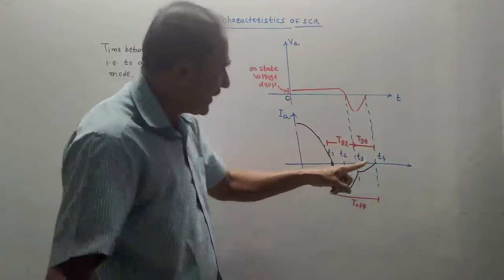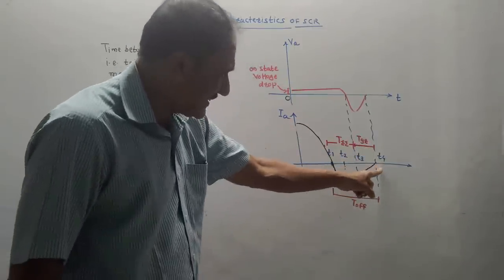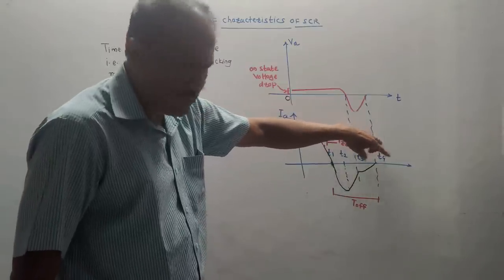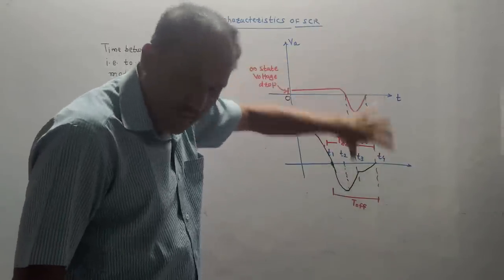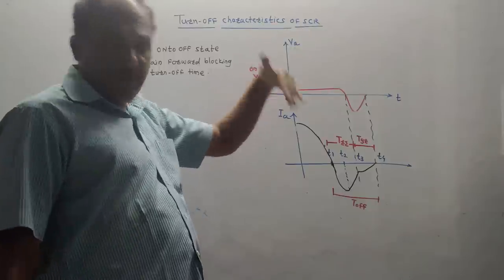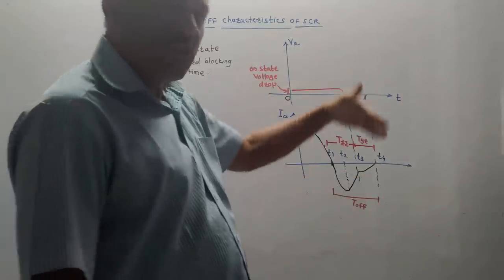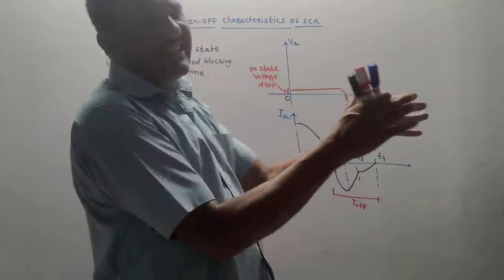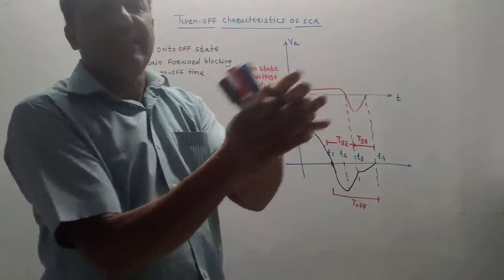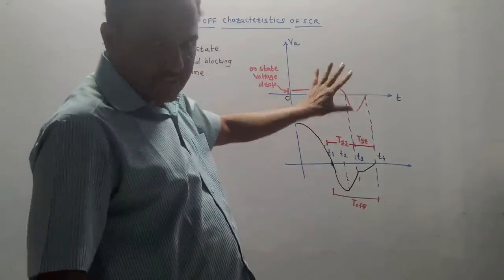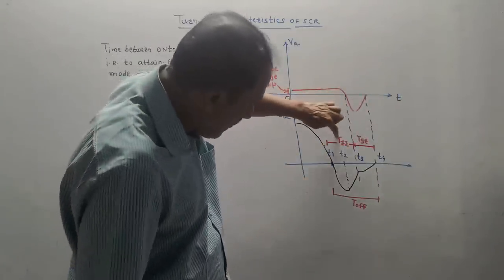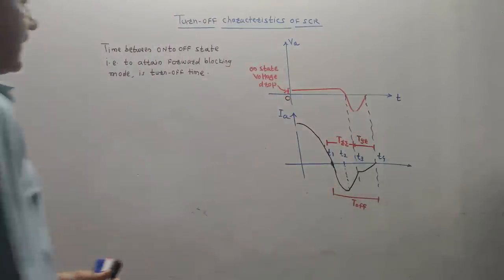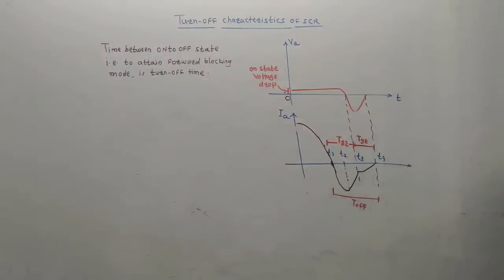I have shown two timing intervals: trr (reverse recovery time) — recovery means removing of excess carriers — and tgr (gate recovery time). I have marked instances t1, t2, t3, and t4. These are the time periods required to remove excess charges from all four layers (N and P layers). The combination of trr and tgr is known as toff — the total turn-off time period.